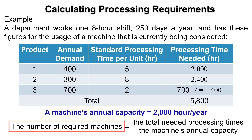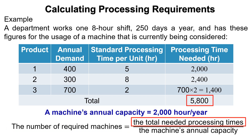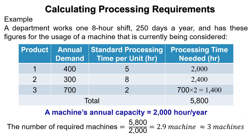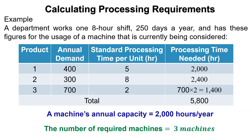Finally, to determine the number of required machines to fulfill the annually forecasted demand, divide the total needed processing times by the machine's annual capacity. This equals 5,800 ÷ 2,000 = 2.9 machines, which approximates to 3 machines. Consequently, three of these machines would be needed to handle the required volume.